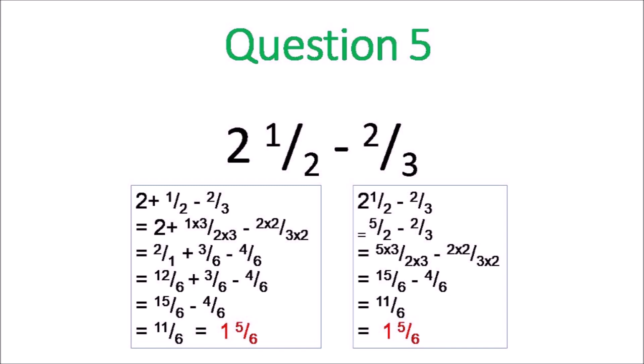Question 5. Subtraction with fractions. Two ways to do it. You can either change it to an improper fraction, or you can just leave the whole number and then subtract the fractions. And anyway you do it, you get 1 and 5 sixths.